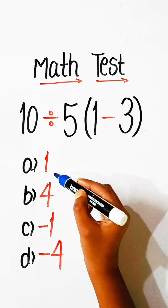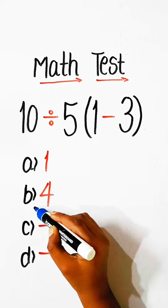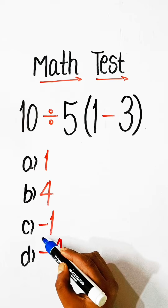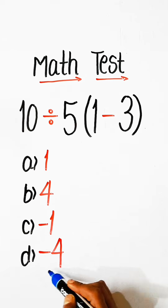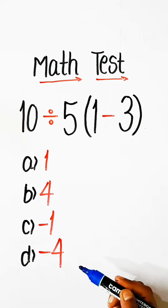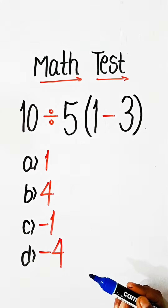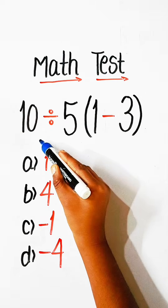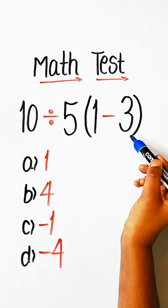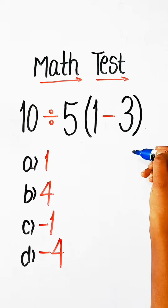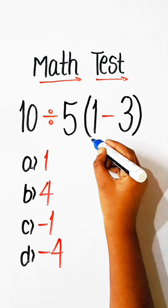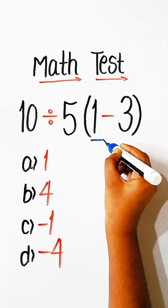Option A: 1. Option B: 4. Option C: minus 1. Option D: minus 4. So let's solve this. In order to solve this equation, according to BODMAS, we will solve the bracket part first.